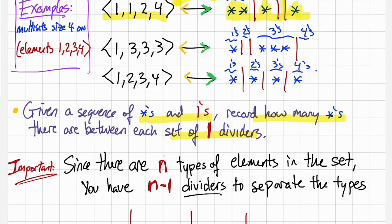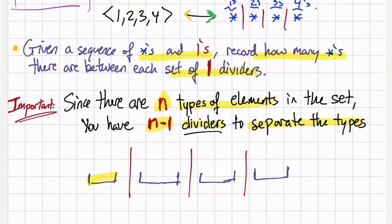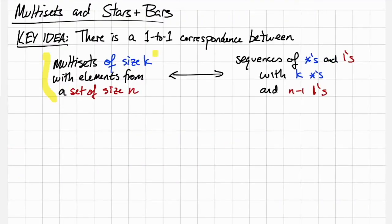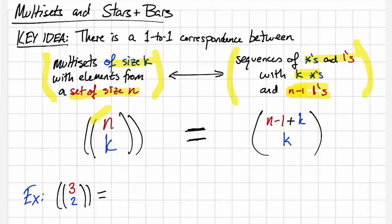One thing we have to be careful about is the distinction between n being the number of types of elements in the set, and n minus 1 being the number of dividers separating the types. How does this let us count multisets? We've just seen there's a correspondence between multisets of size k with elements from a set of size n and sequences of stars and bars with k stars and n minus 1 bars. So that tells us that n multi-choose k is equal to n minus 1 plus k choose k. As an example, we see that 3 multi-choose 2 is equal to 4 choose 2, which is equal to 6.